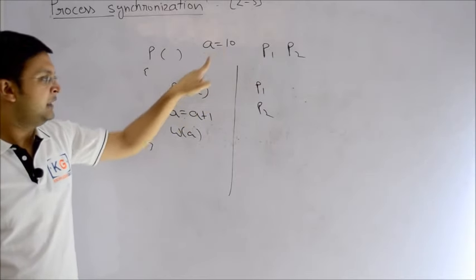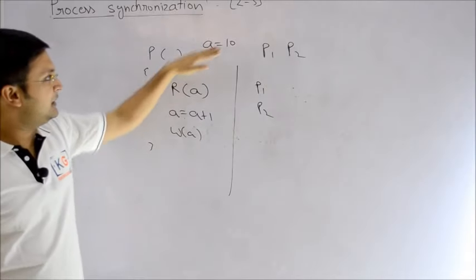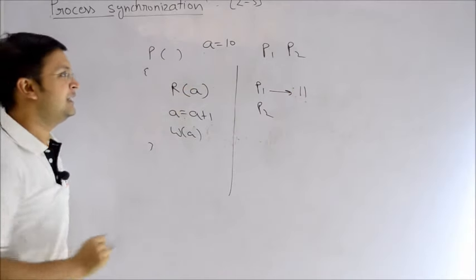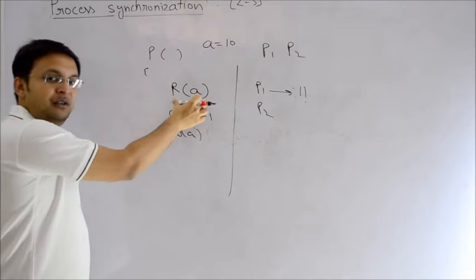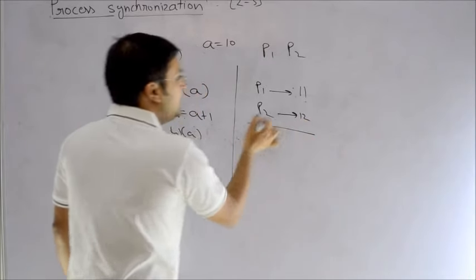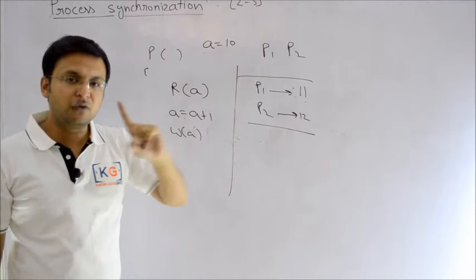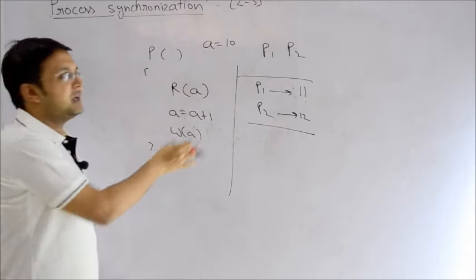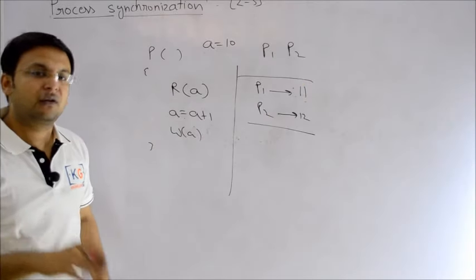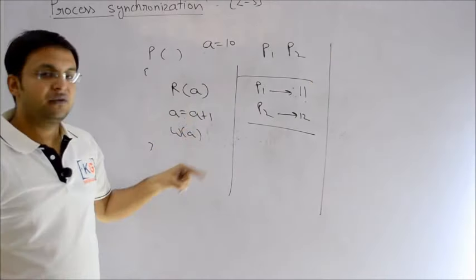If we run P1 and P2 in a systematic sequential fashion: P1 reads the value 10, increments it to 11, then writes 11. When P2 comes, it reads 11, adds 1 to get 12, and writes 12. This is correct — two increments produce 12. The program is the same but these two processes are entirely different entities.